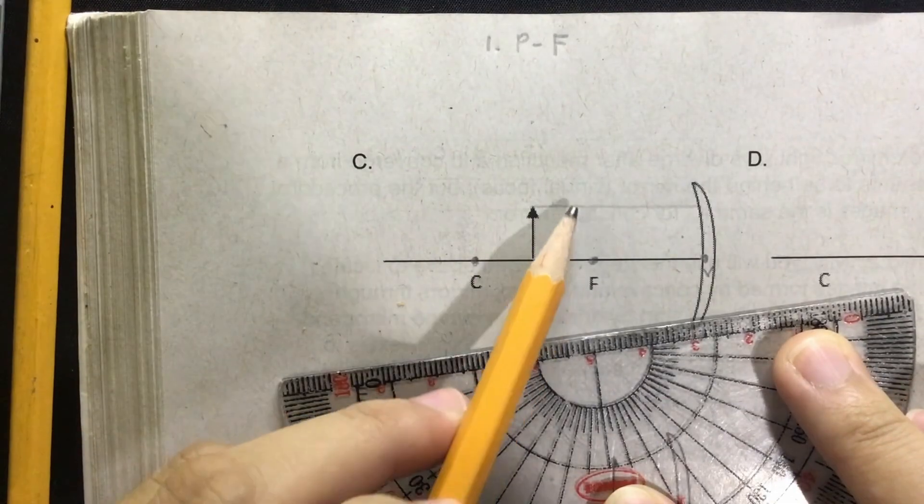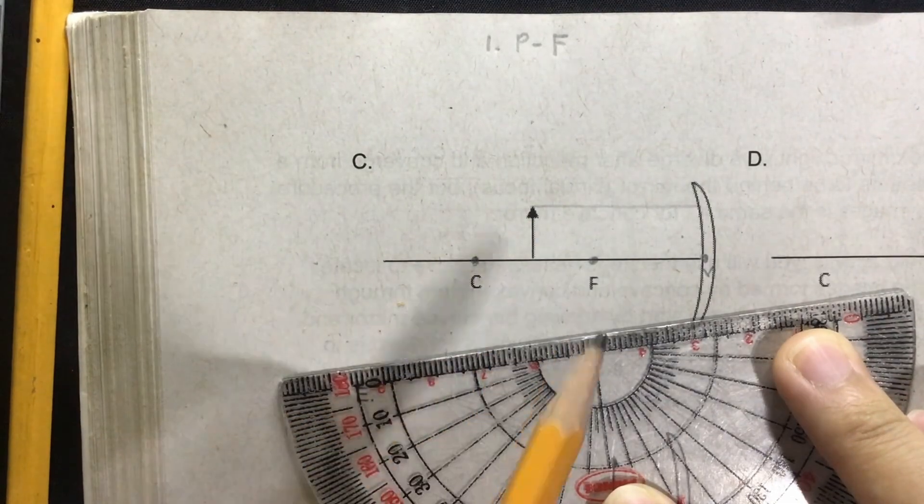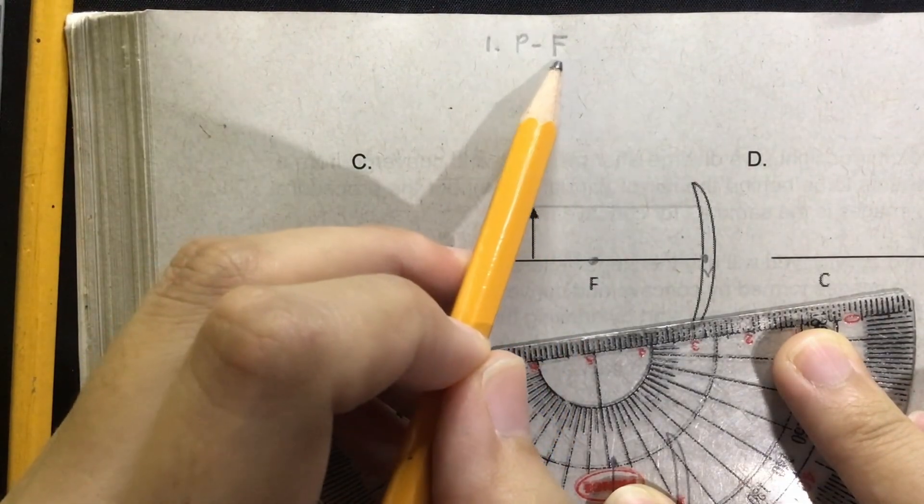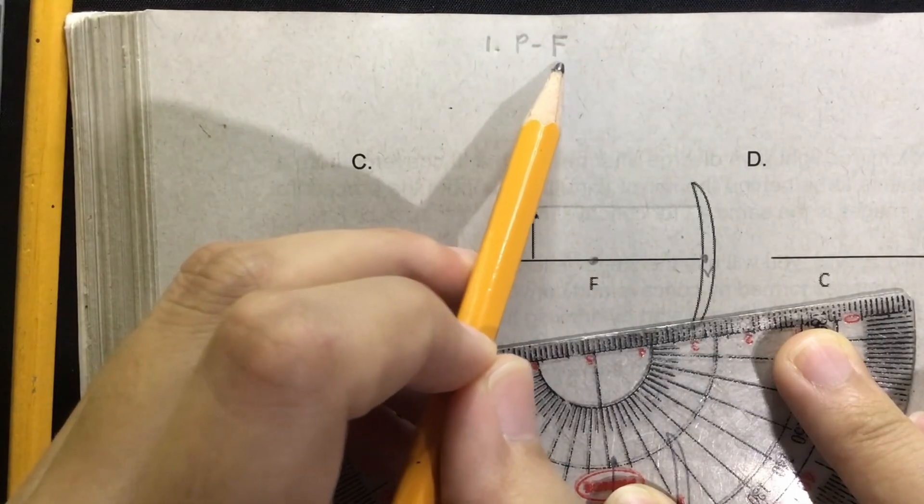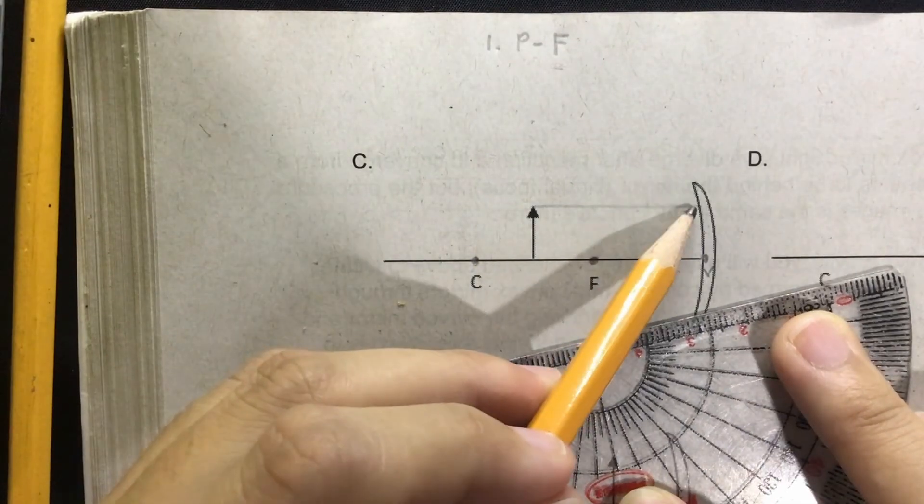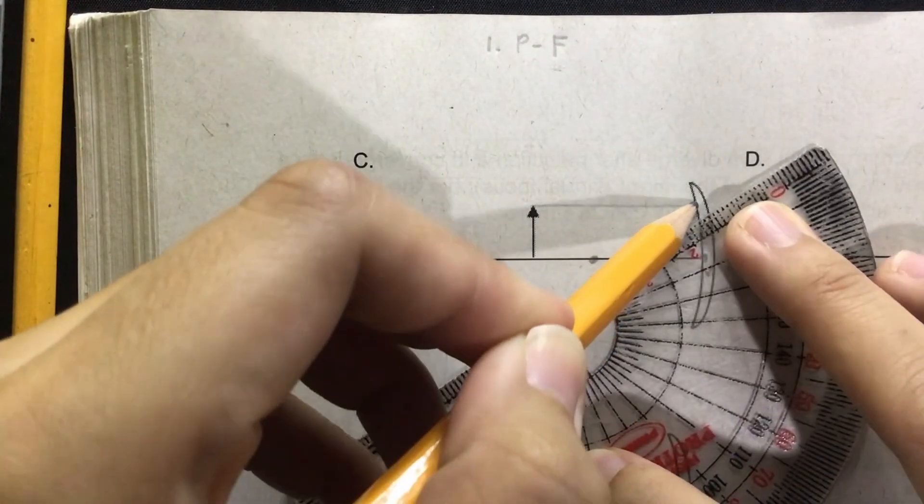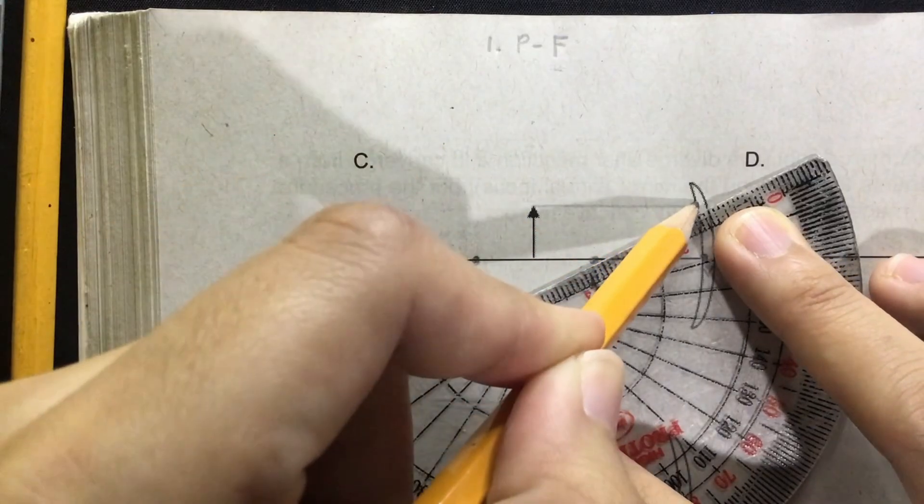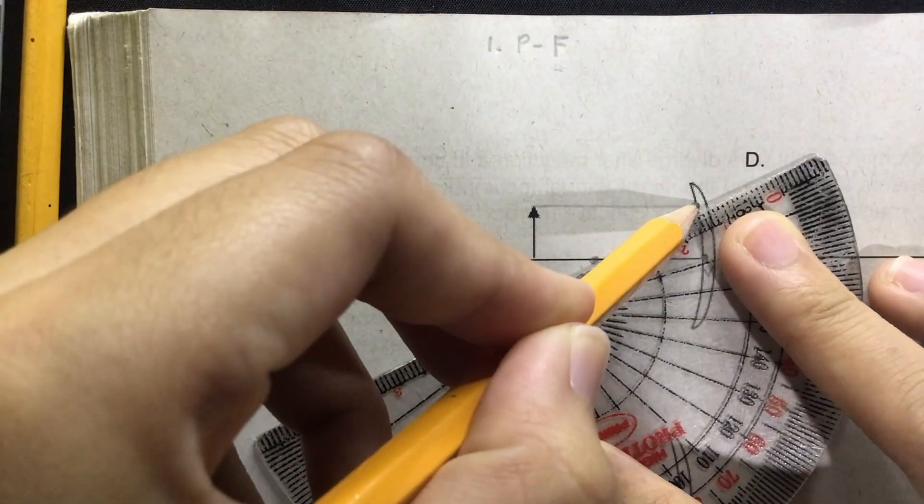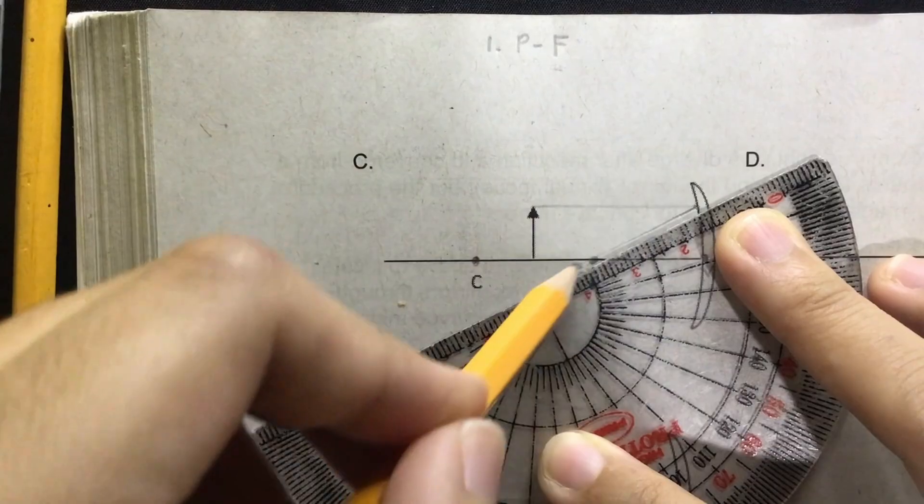Next, let's perform the F ray, and that is a reflected ray passing through the focal point or the focus.